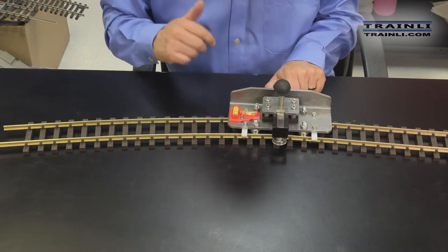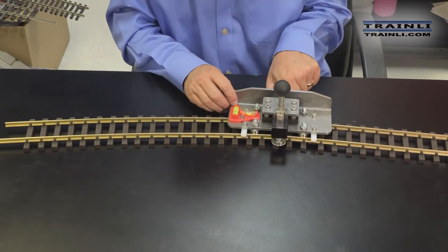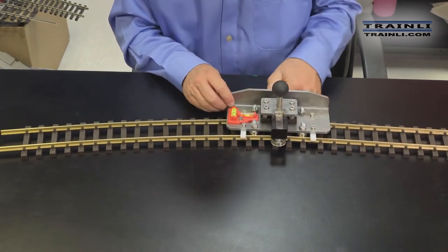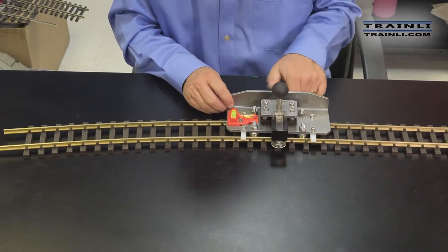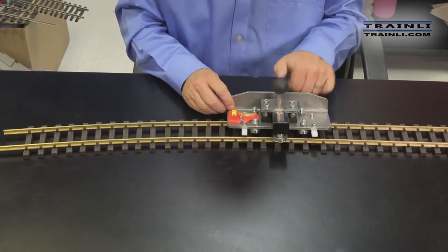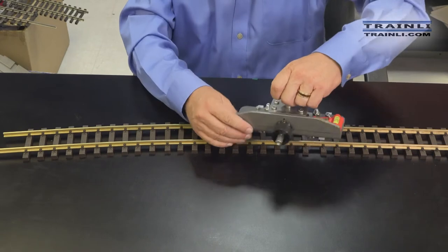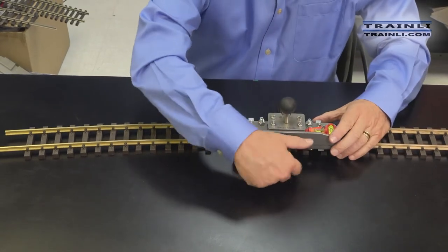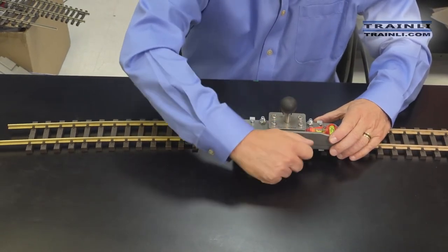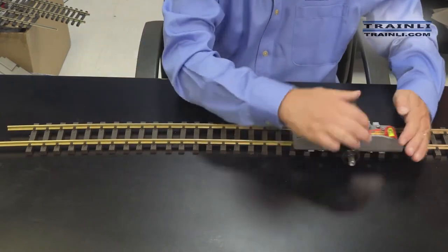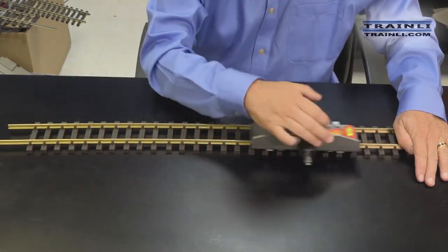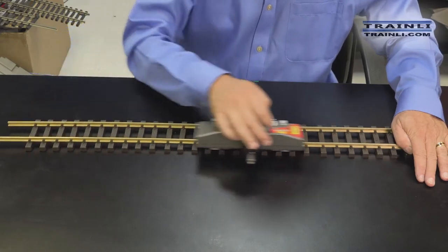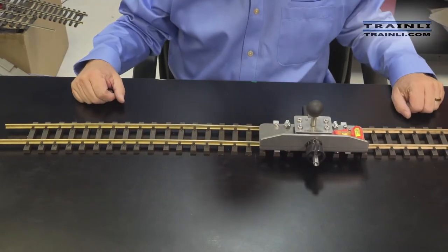Now you could say like, oops, I didn't want to do that. I need to fix this. Super easy to do. Take this off, spin it around, tighten it back up. There, and now your track is straight again.